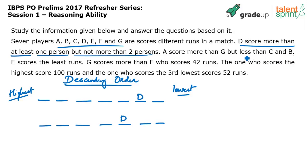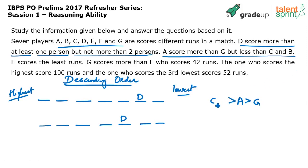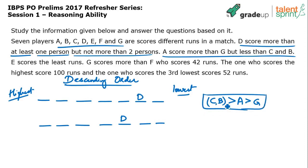A scored more than G but less than C and B. So A has scored more than G, and A has scored less than C and B. Between C and B we don't know the order, but this gives us a four-person set: C and B are greater than A, and A is greater than G.